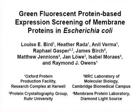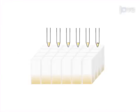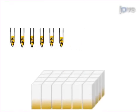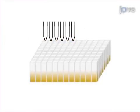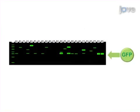The overall goal of this procedure is to identify membrane proteins expressed in Escherichia coli for structural and functional analyses. First, the bacteria are harvested, lysed and analysed by SDS-PAGE for visualisation of the correctly folded GFP proteins by in-gel fluorescence.